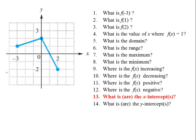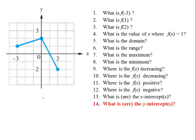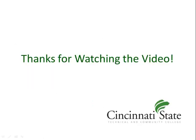What are the x-intercepts? There's just one — that's where the graph crosses the x-axis, and that happens at x equals 1. We could write it as x equals 1, or as the ordered pair (1, 0). What is the y-intercept? There's always going to be just one y-intercept if it's a function, because for every x there's one and only one y, so we can't have multiple y-intercepts. The graph crosses the y-axis here, so the y-intercept is at y equals 2, or f of x equals 2, or the ordered pair (0, 2). Thanks for watching.